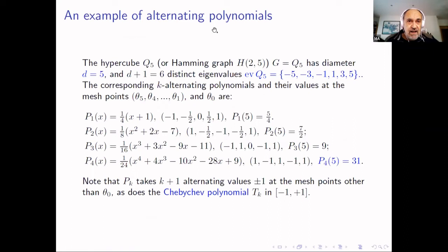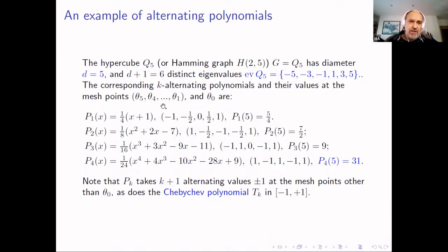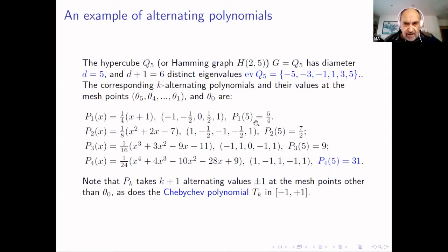Let's see an example of alternating polynomials. We computed them for the hypercube of dimension five, or Hamming graph H(2,5), which has diameter five, six different eigenvalues, and is bipartite. The corresponding alternating polynomials and their values at the mesh points are shown. Note that the higher the degree, the greater the maximum value at the spectral radius.